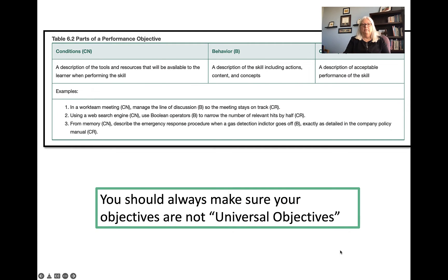Here's an example from the book about the parts of the objective. We have the conditions — a description of the tools and resources that will be available to the learner when performing the skill. The behavior is a description of the skill. And the criteria is a description of the acceptable performance of the skill. For example: 'in a work team meeting' is the condition, 'the learner will manage the line of discussion' is the behavior, and 'so the meeting stays on track' is the criteria. Every performance objective has to have these three parts.